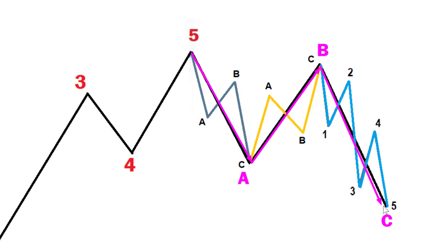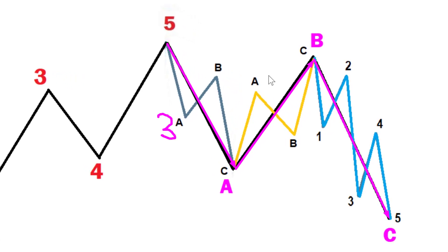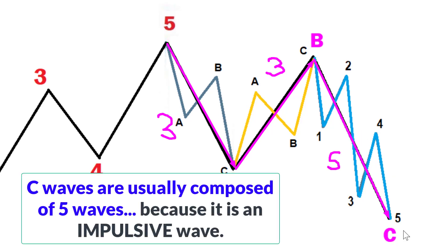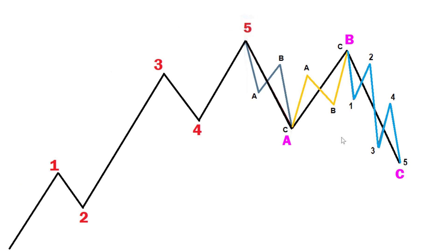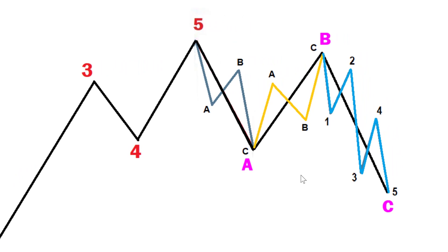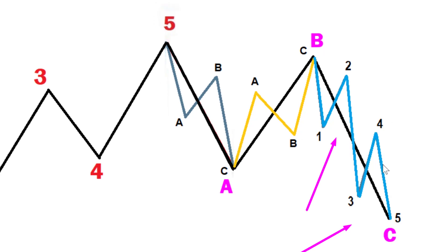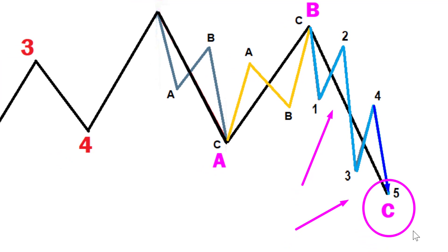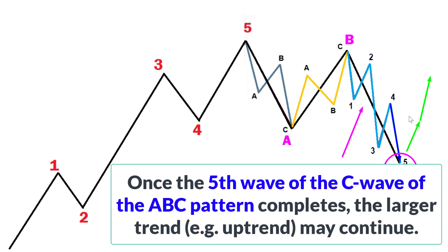A waves are often composed of three waves. B waves are often composed of three waves as well. But C waves are often composed of five waves — C waves are impulsive waves. To keep it simple, the C wave of an ABC structure has five smaller waves within it. Once you get the fifth wave of that C wave completing, then we can get ready for the C wave to complete and likely start the next major trend to the upside — the continuation of the uptrend higher.